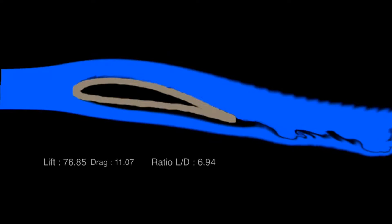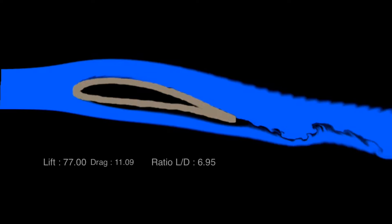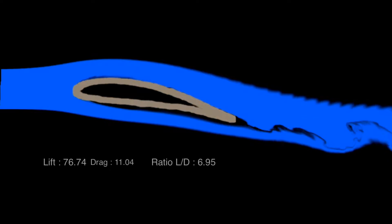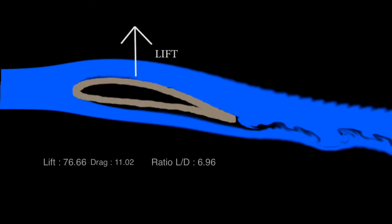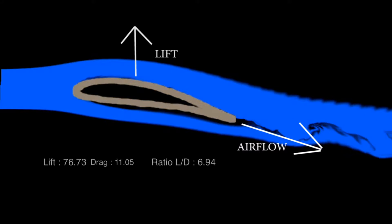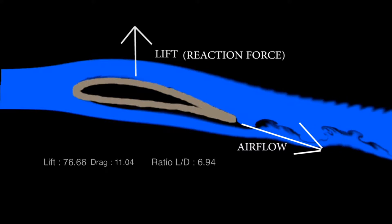Here's an example of a plane's wing, or aerofoil, in a 2D simulation of a wind tunnel. There are two methods of explaining aerodynamics and how lift is produced. The first, by Isaac Newton, says that the aerofoil creates the force of lift because it curves the airflow around it downward, which results in an equal and opposite reaction force that pushes against the wing upwards.